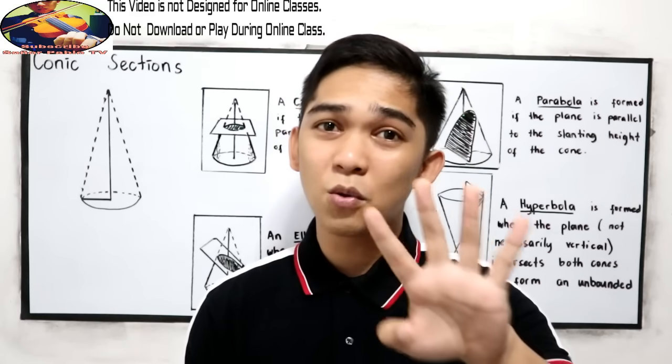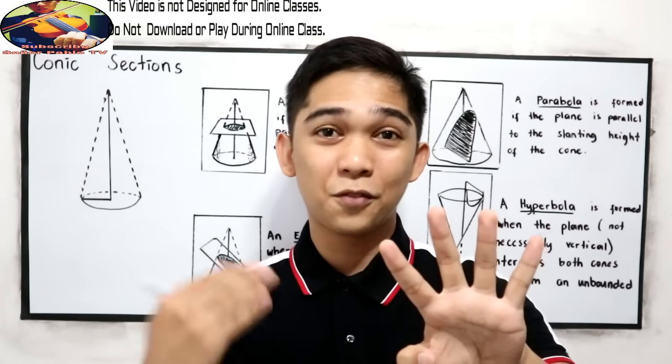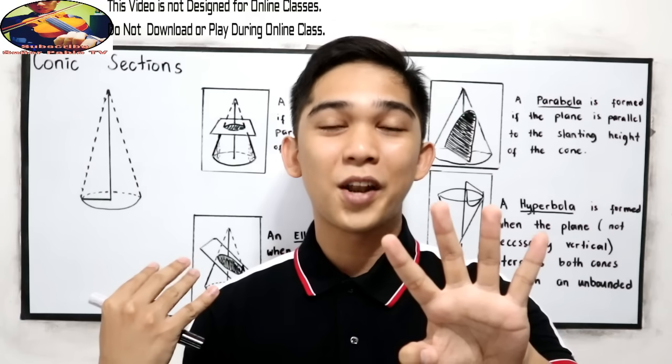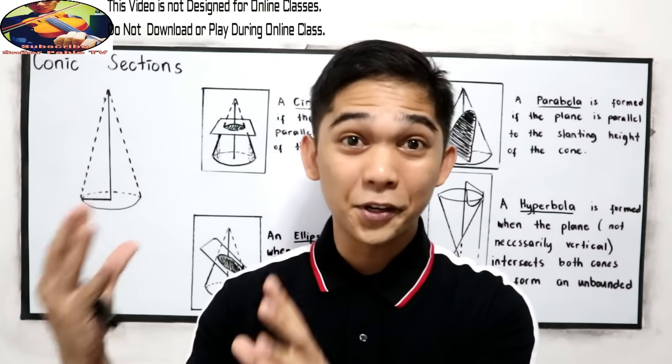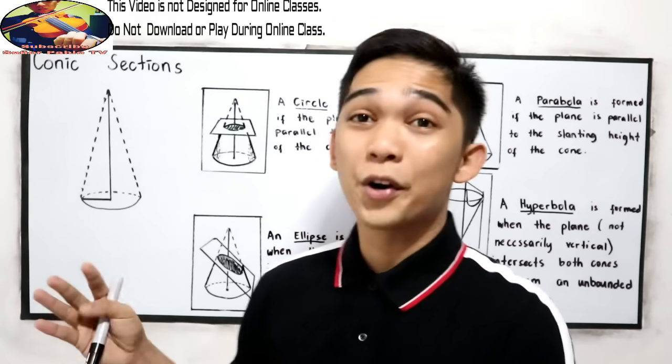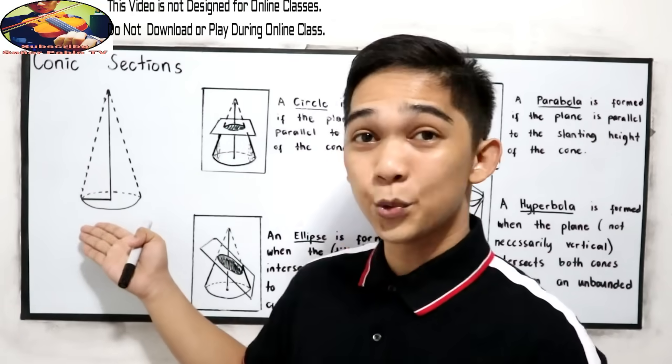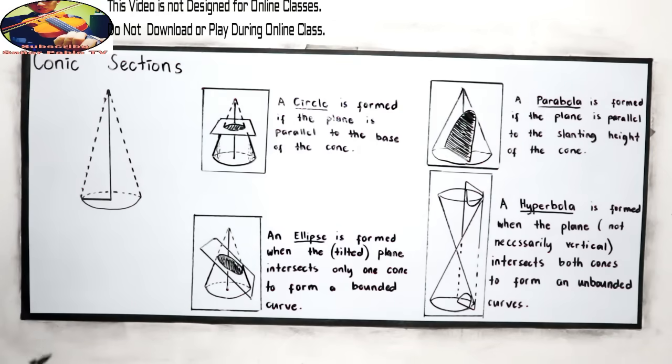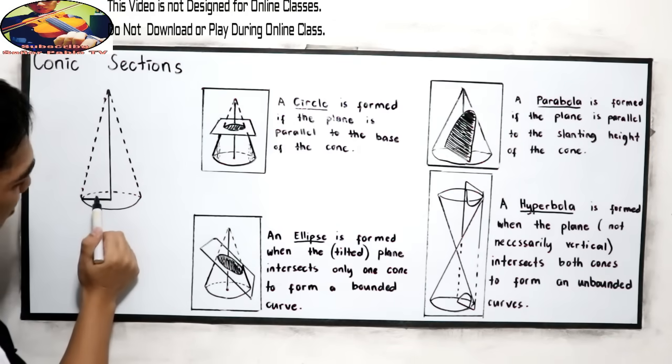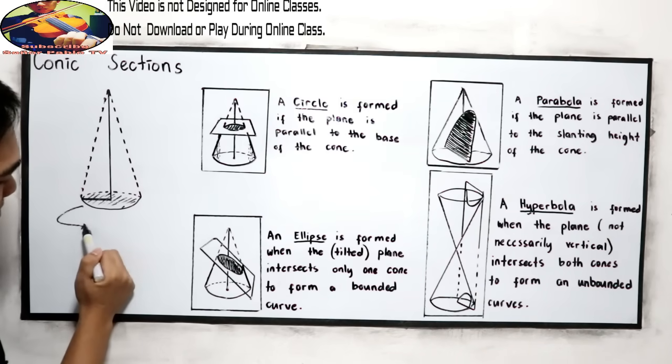But before we discuss those four different conic sections, let us first familiarize ourselves with the cone. So this is our cone, and we have its parts. This is our base.